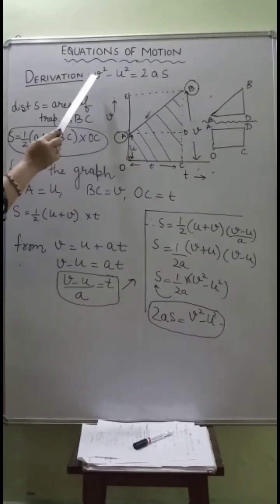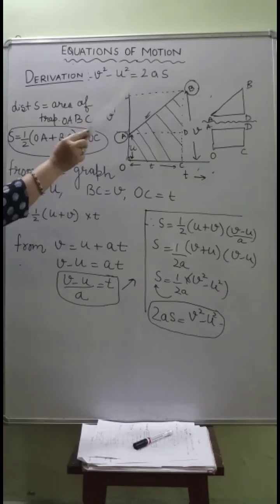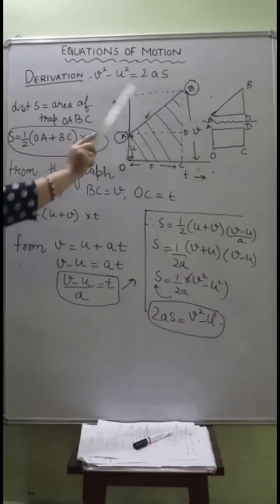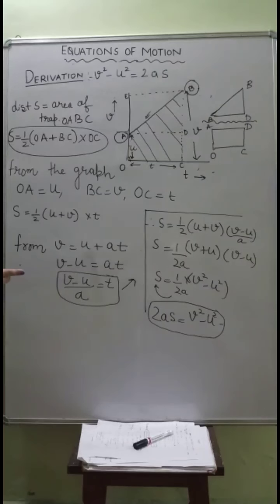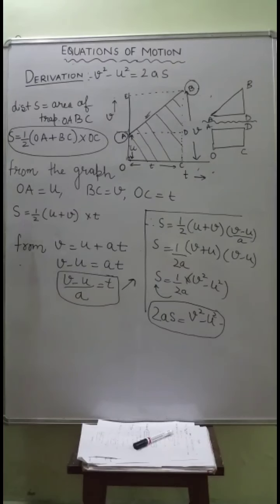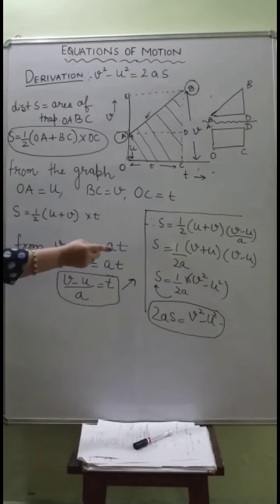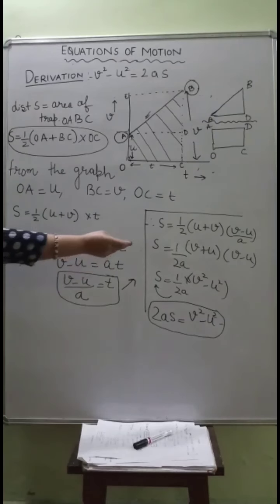Looking at the third equation v² - u² = 2as carefully, there is no t in this equation — time is not present. So we must eliminate t. Using the first equation v = u + at, rearranging gives v - u = at, so t = (v - u) / a. We substitute this value of t into s = ½(u + v)t, giving s = ½(u + v) × (v - u) / a.